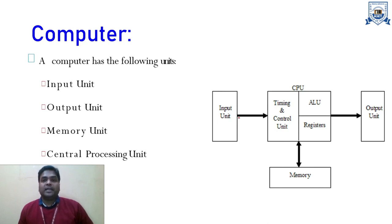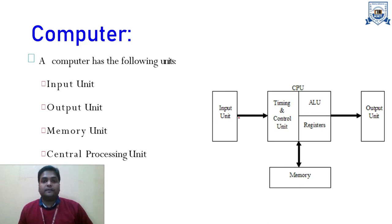Whenever there is a requirement of a program through which processing can be performed, we generally use a processor. As the name suggests — microprocessor — when we are talking about remote controls for devices like televisions or air conditioners, we don't require a huge processor. We require a very small processor, and that processor is known as a microprocessor.